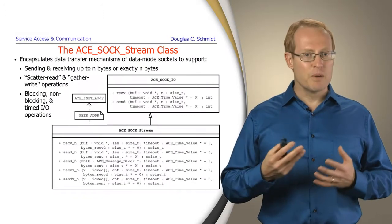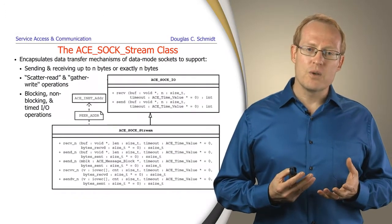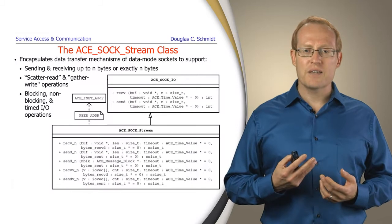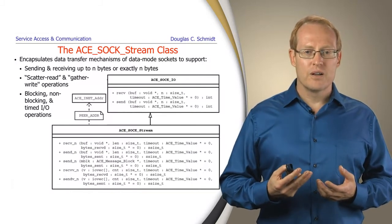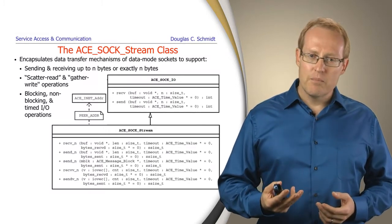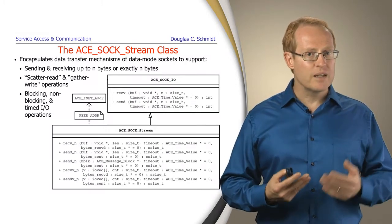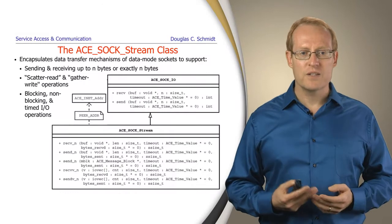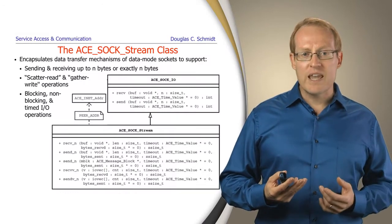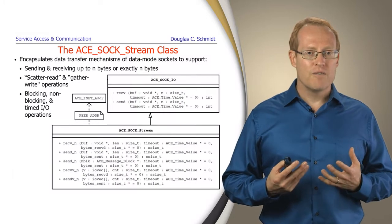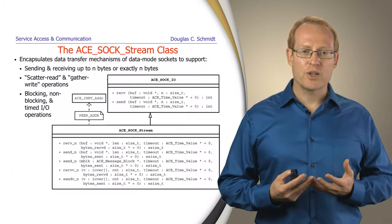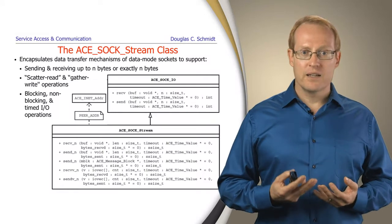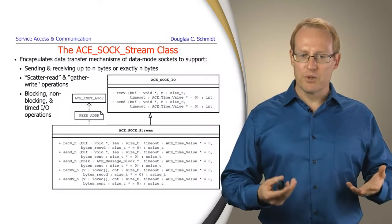Let's talk a bit about the classes. One of the key classes you use when you program with the socket wrappers is the ACE_SOCK_Stream class. And this class essentially encapsulates data transfer between connected peers. It has methods in there that allow you to send and receive up to n bytes of data, as well as exactly n bytes of data, so no more confusion with short reads and short writes. It supports scatter-read and gather-write operations, which allow you to do very efficient domain-crossing interactions to send groups of data or receive groups of data in one fell swoop. And it also makes it easy to perform blocking, non-blocking, and timed I/O with a very similar interface.